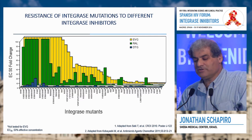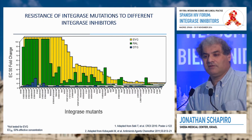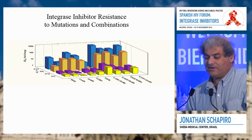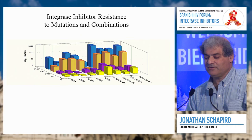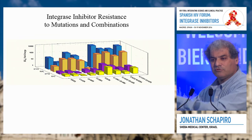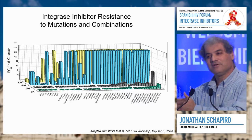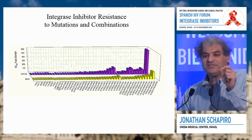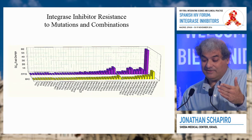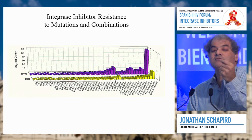Remember the fold-resistance figure where higher is worse? Now let's look at Gilead's data for bictegravir. Elvitegravir and raltegravir in the back have a lot of resistance; dolutegravir and the yellow bictegravir in front show much lower levels. Similar to dolutegravir, at least in the laboratory, bictegravir seems to have lower resistance levels — it looks like a second-generation drug. And in a larger panel, the company's data suggests bictegravir looks even tighter than dolutegravir.